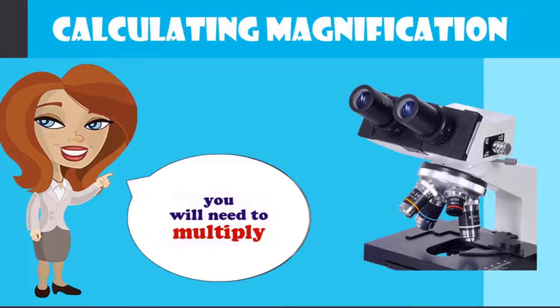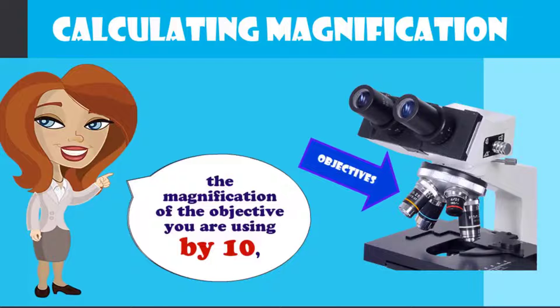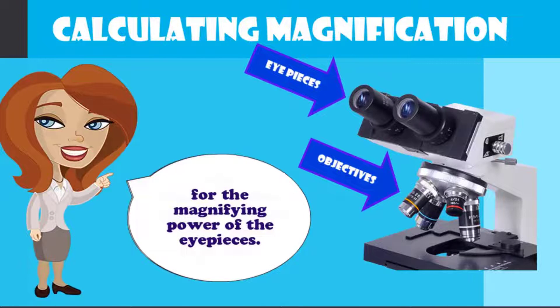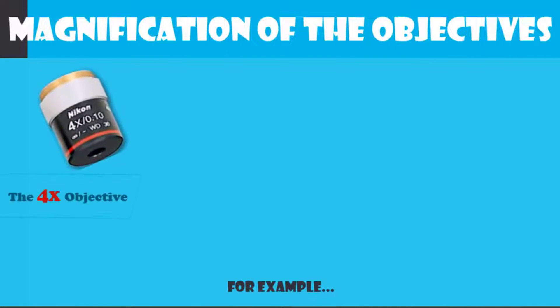In order to calculate the total magnification, you will need to multiply the magnification of the objective you are using by 10 for the magnification power of your eyepieces.